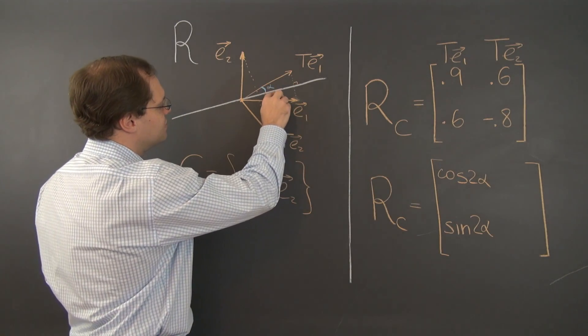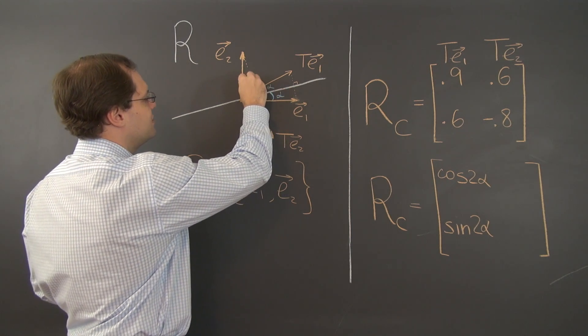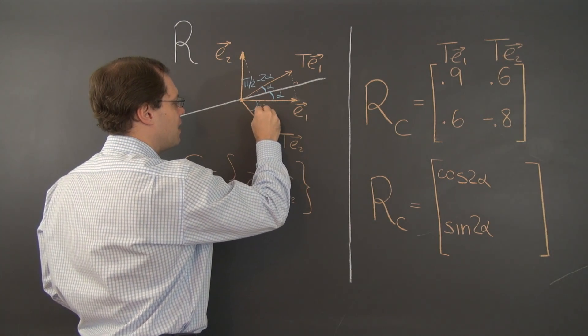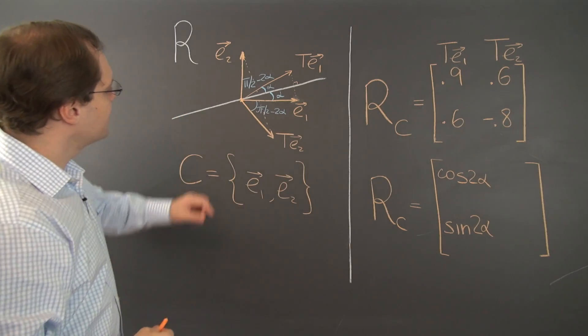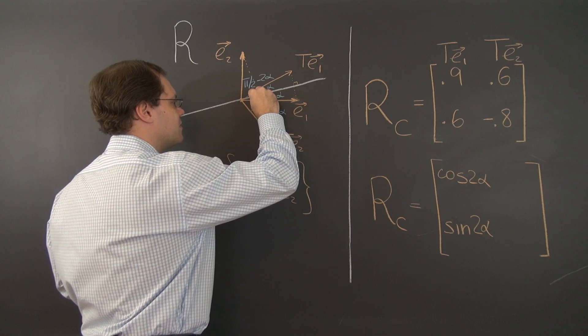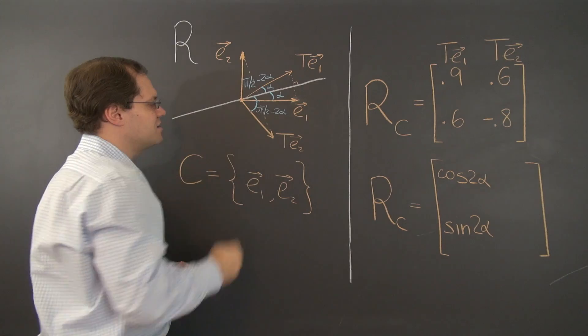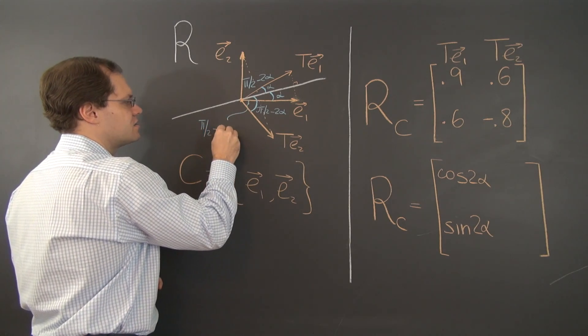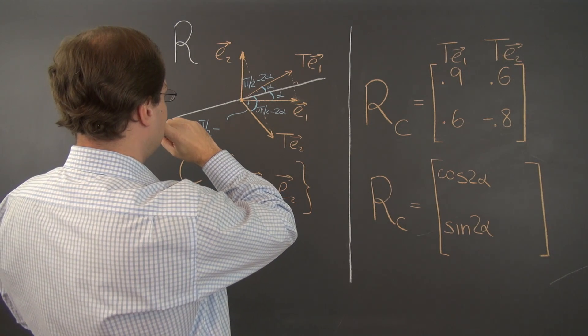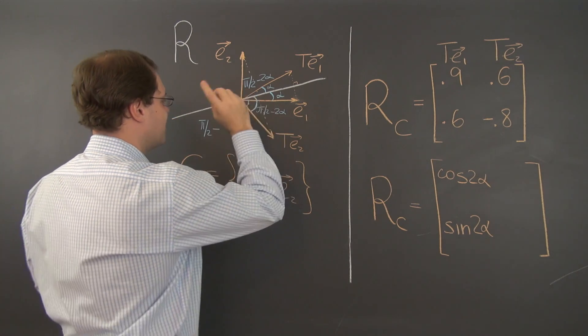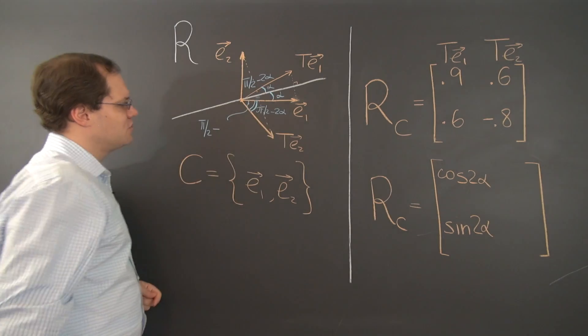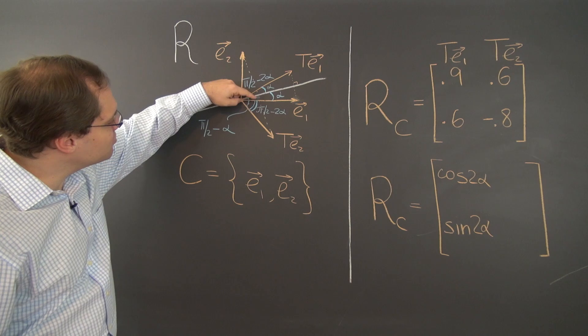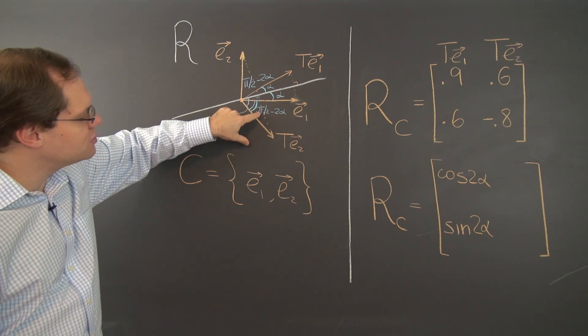And then for the other one, so if this angle is 2 alpha, then this angle right here is pi over 2 minus 2 alpha. So this angle is pi over 2 minus 2 alpha. This combined angle is pi over 2 minus alpha, as you can see from the picture. So this angle right here, the angle that we need in order to decompose T of E2 is pi over 2 minus 2 alpha.